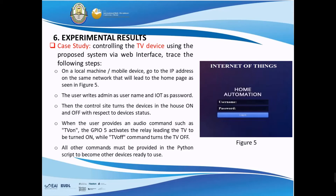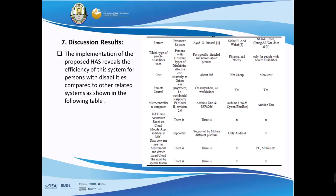When the user provides an audio command such as 'TV on', that activates GPIO5, triggering the relay and turning the TV on. The 'TV off' command turns the TV off. The same steps can be implemented with other devices.